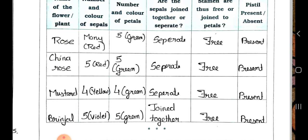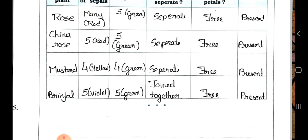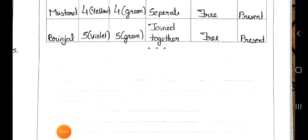Pistil is present for mustard. Brinjal: sepals are five and green, petals are five and violet in color. Sepals are joined together, stamens are free, and pistil is present. Now your chapter is completed. We will see the next chapter in the next video. Stay safe, stay healthy. Okay, bye.